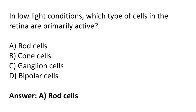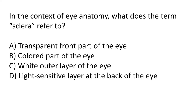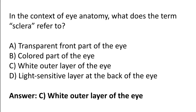In the context of eye anatomy, what does the term sclera refer to? Transparent front part of the eye, colored part of the eye, white outer layer of the eye, or light-sensitive layer at the back of the eye. The correct answer is option C.